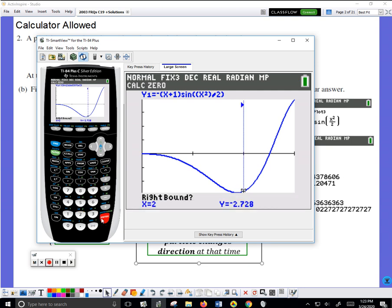Now I need a right bound. Over here at 3 will be sufficient. If x equals 3, press enter. It asks for a guess. The cursor needs to be somewhere in the vicinity of the zero. That's definitely somewhere in the middle. So I'm going to type 2.5, press enter.